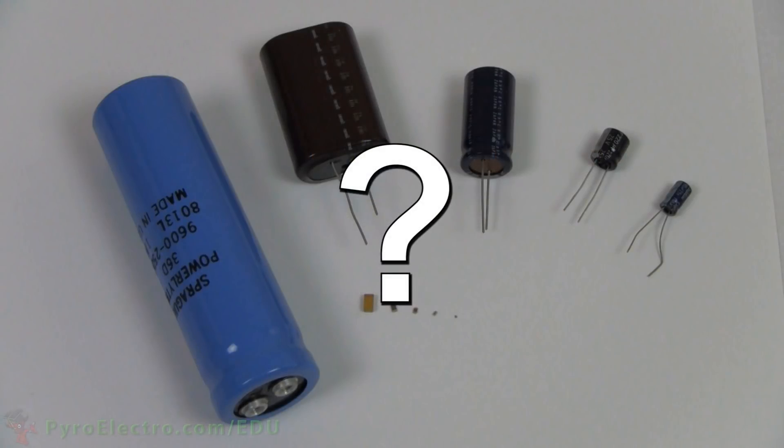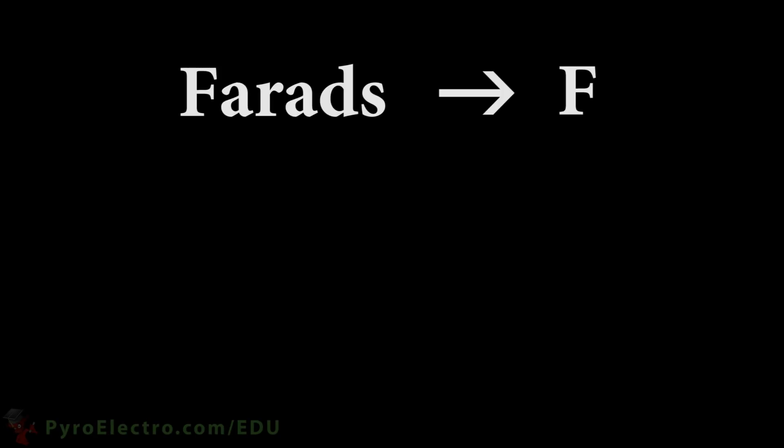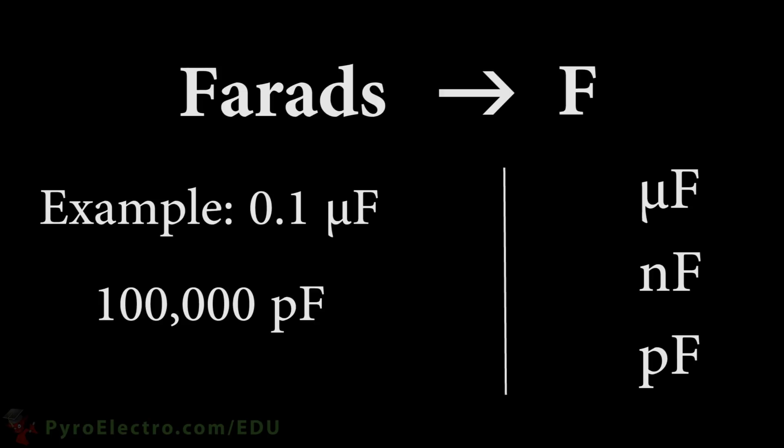So now we have to ask ourselves, what is actually happening here, and how do I know which capacitor is what electrical capacitance? To start, electrical capacitance is measured in farads, the capital letter F. For example, 0.1 microfarad or a 100,000 picofarad capacitor is a common value used in electronics.